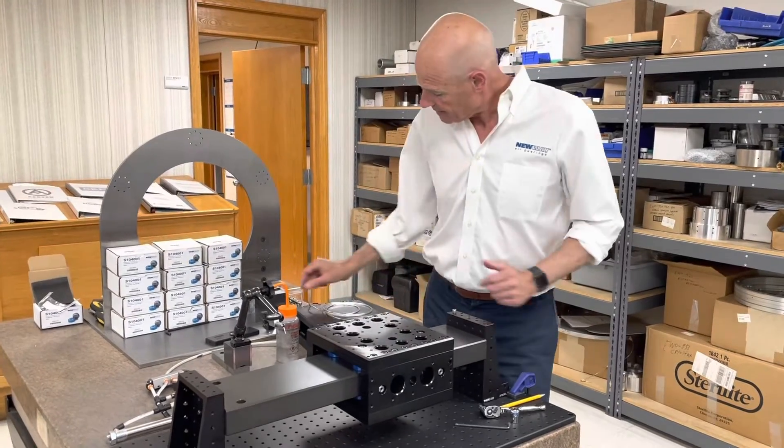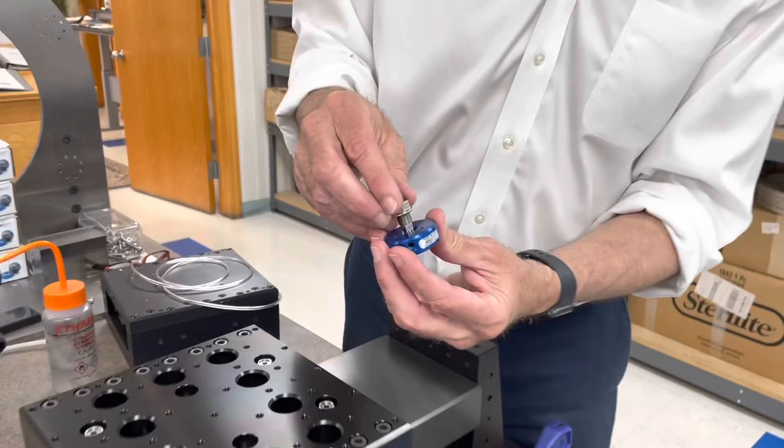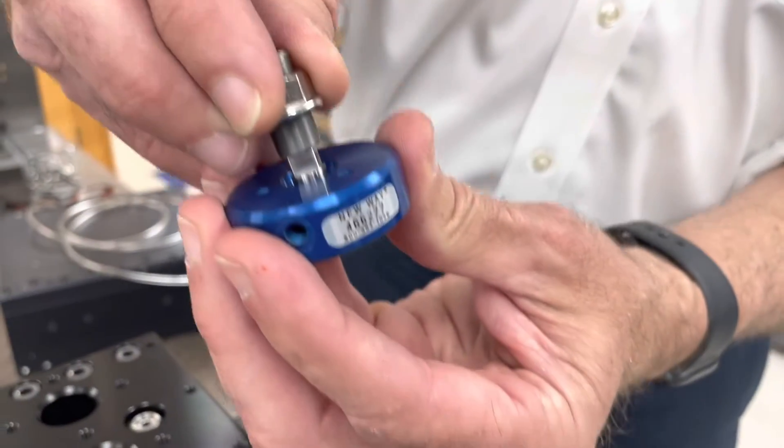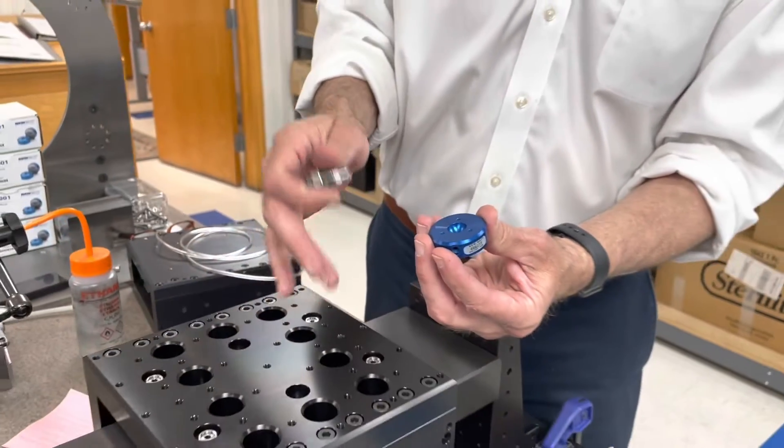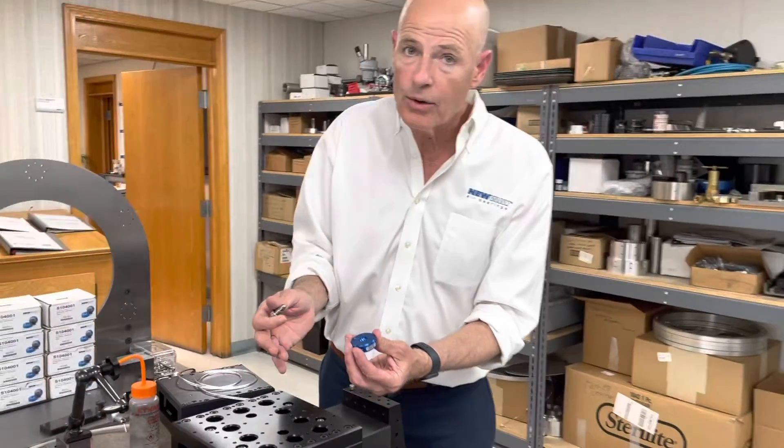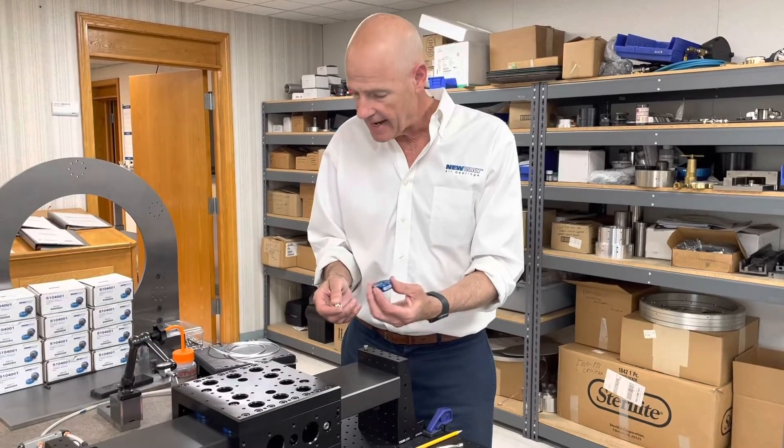Also, because the bearing has a thread in it, you can adjust the height of the stage and by adjusting the height of the stage you would be able to easily set your motor preloads. That's another advantage of it.